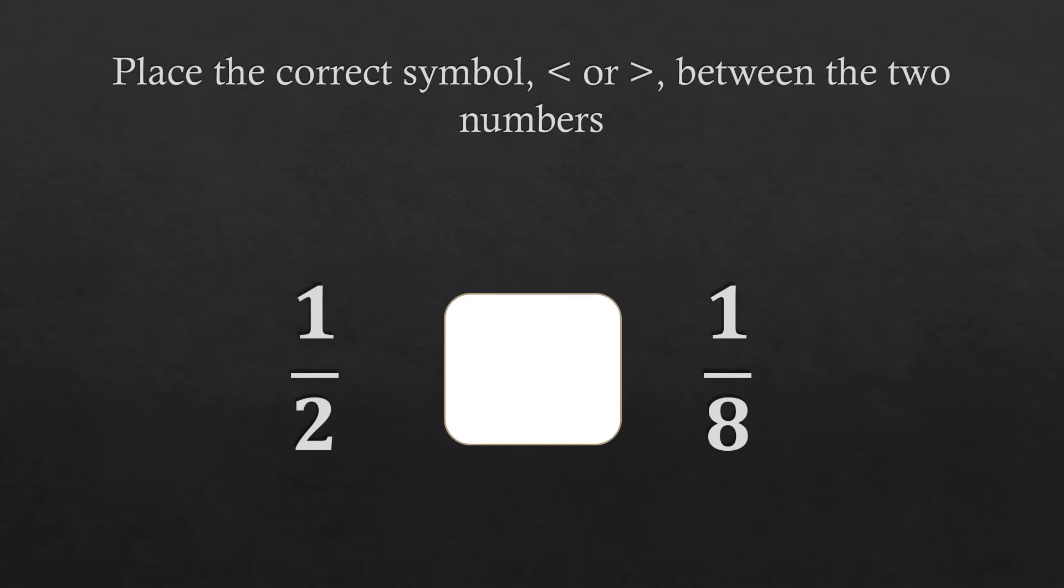Okay, so let's start with the first example. Place the correct symbol, less than or greater than, between the two numbers or the two fractions. So we have the first fraction is one half and the other fraction is one eighth. Now I guess some of you know that when you try to compare fractions which has similar numerator, all you have to do is look at their denominator.